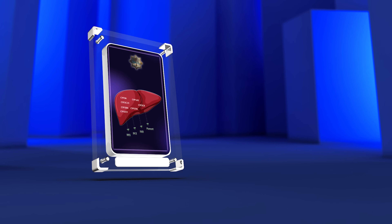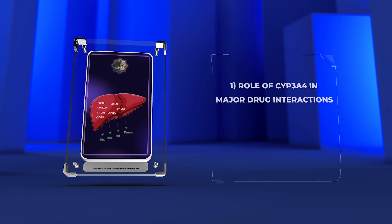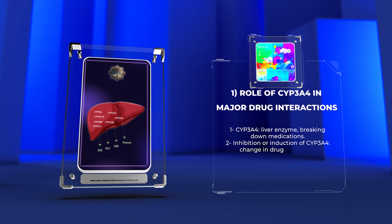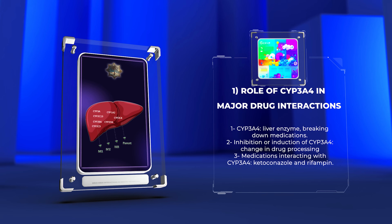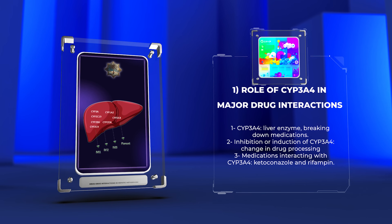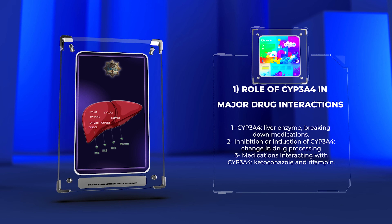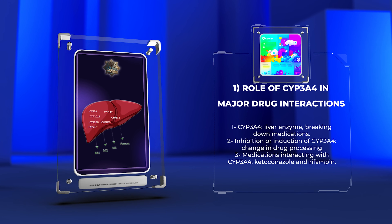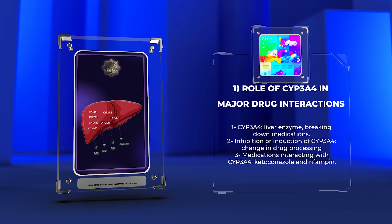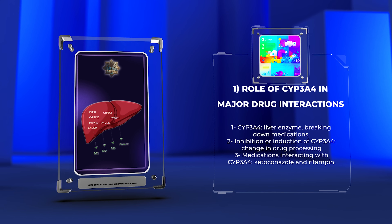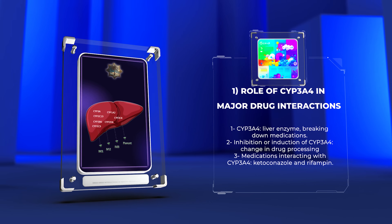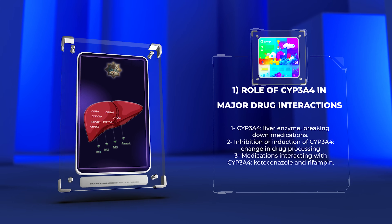CYP3A4 is an important liver enzyme responsible for breaking down many commonly prescribed medications. Inhibition or induction of CYP3A4 can change how drugs are processed, leading to possible toxicity, adverse effects, or ineffective treatment. Medications like ketoconazole and rifampin are known to interact with CYP3A4.